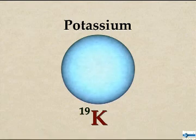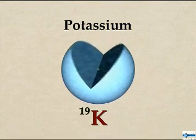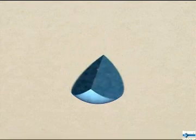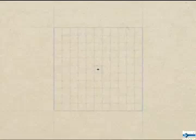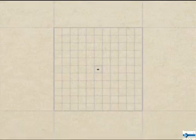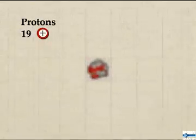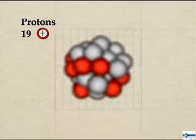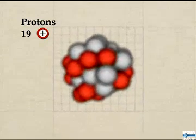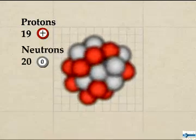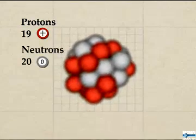Each atom of potassium consists of a cloud of electrons surrounding a compact nucleus that contains almost all the atom's mass. In the most common form of potassium, its nucleus has 19 positively charged protons, plus 20 uncharged neutrons.